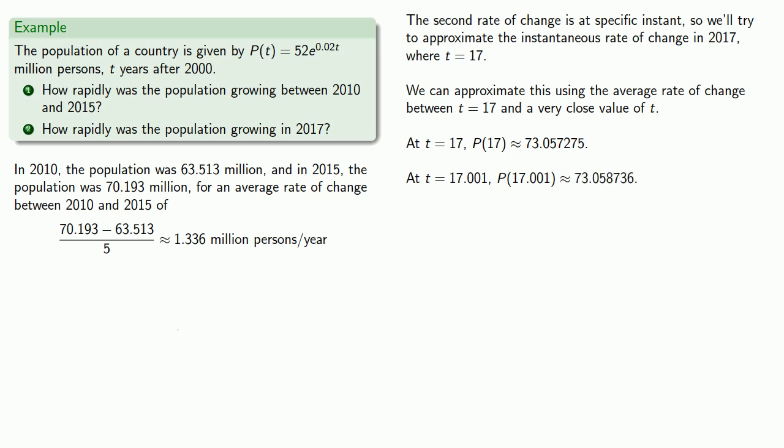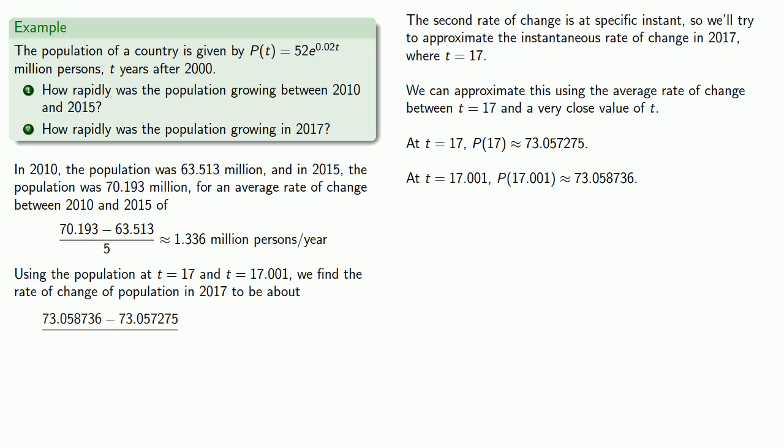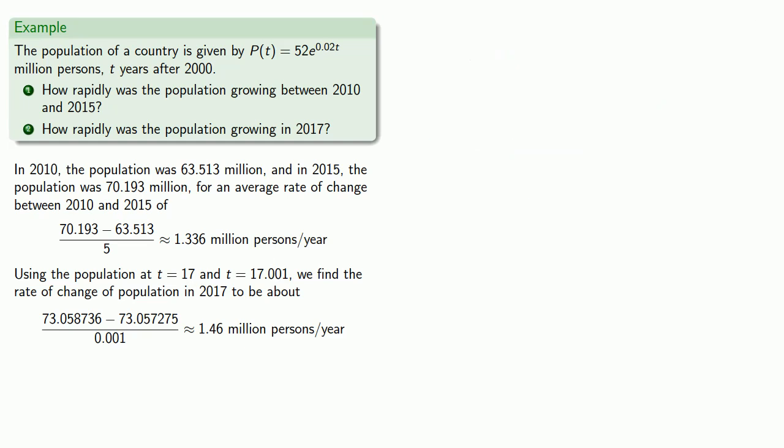We can summarize our results. Using the population at t = 17 and t = 17.001, we find the rate of change of population in 2017 to be about end minus beginning over how long it took. That works out to be about 1.46 million persons per year.